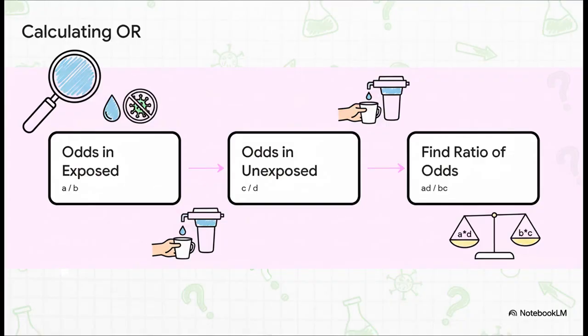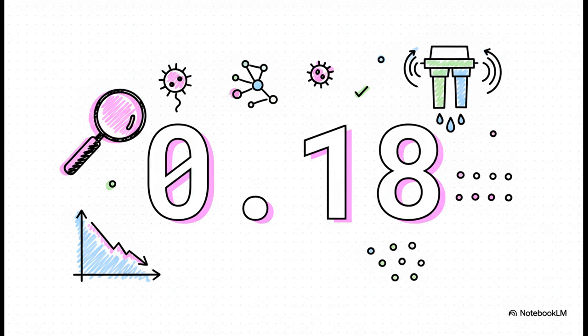So, calculating odds is a bit different from risk. For our filter group, we take the number who got sick and divide it by the number who didn't get sick. So, A divided by B. We do the same for the other group, C divided by D. Then we find the ratio of those two results. But, pro tip, there's a super easy shortcut. You just cross multiply. A times D and divide that by B times C. Way faster. So, when we plug in our numbers from the cholera case, that's 10 times 450 divided by 490 times 50, we get an odds ratio of about 0.18.